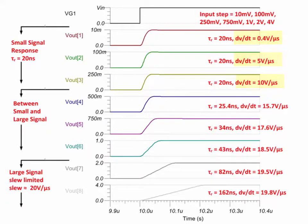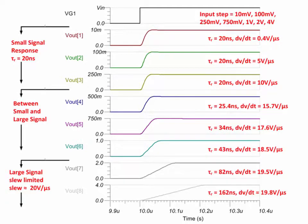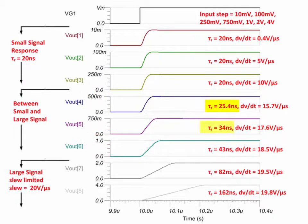You can see that the rate of change for the small step response is lower than the slew rate. Also notice that the output signal increases exponentially for the small signal response, as opposed to the linear increase for amplifiers that are slew rate limited. For input steps between 500 millivolts and 1 volt, the amplifier is transitioning between small signal and large signal response. In this region, the rise time is no longer constant.